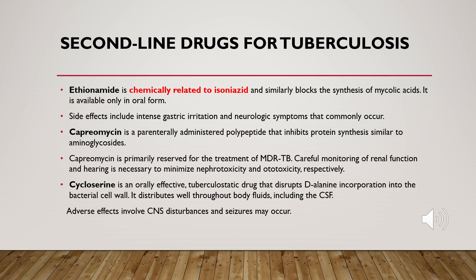The three second-line drugs are ethionamide, capreomycin, and cycloserine. Ethionamide is chemically related to isoniazid and also blocks the synthesis of mycolic acid. It is only available orally and can cause gastric irritation and neurological symptoms as side effects.